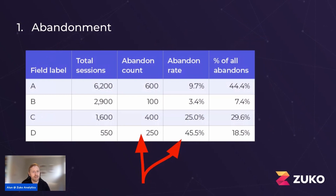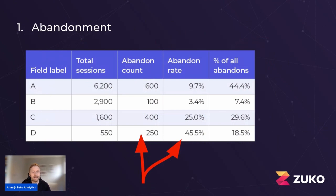When you look at abandonment, there are probably two things you need to look at. First is sheer volume — abandonment count. If we look at this table here, it's dummy data, but you've got fields A, B, C, D, and across here you have abandonment count. You can see field A has 600. The reason you look at the highest volume is because that's the biggest potential for improvement — the bigger the improvement, the bigger the return on investment, because you'll reduce your total abandonment by a large amount.